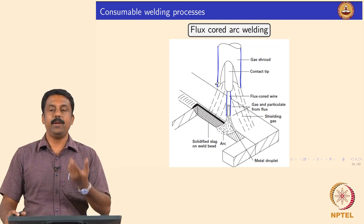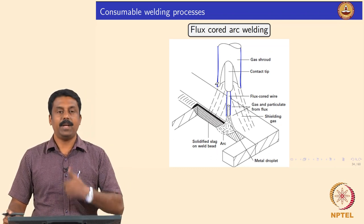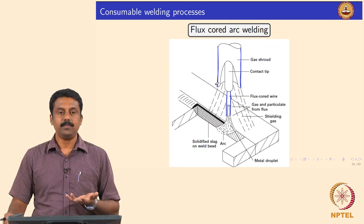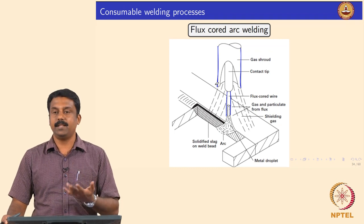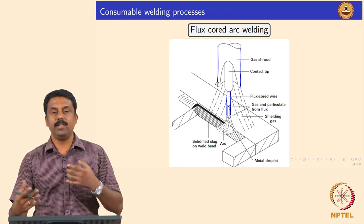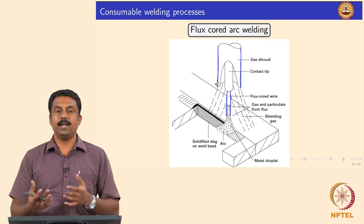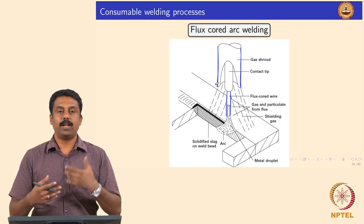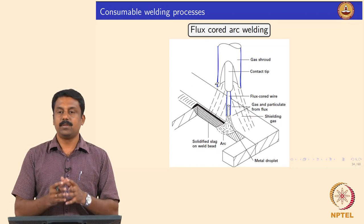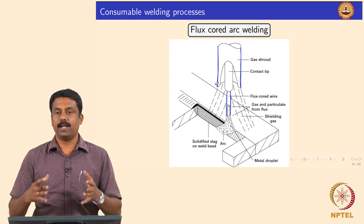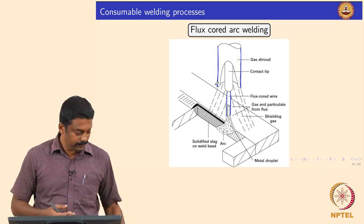In that case you can reduce the gas-generating compounds from the flux and add more alloying elements, so process stability increases — it becomes similar to GMAW. The advantage is you get the efficiency of GMAW and also the advantages of FCAW: the flux interfering with and enhancing the kinetics of droplet transfer, and protecting the weld pool via the slag.